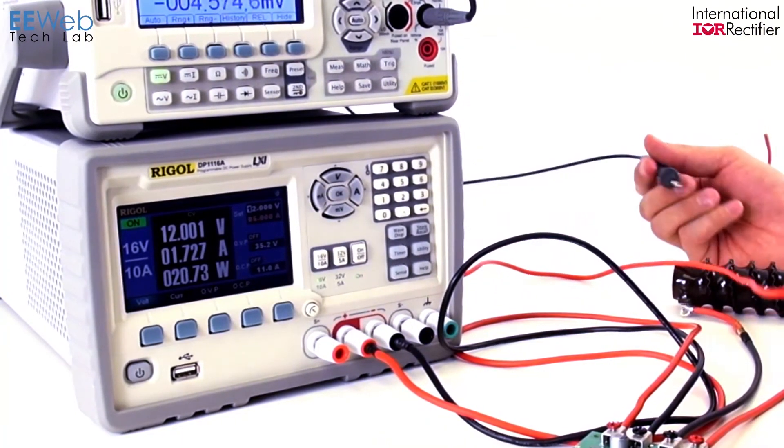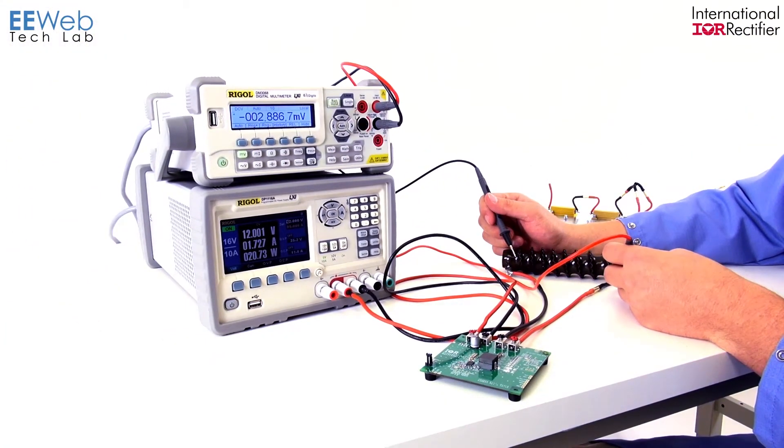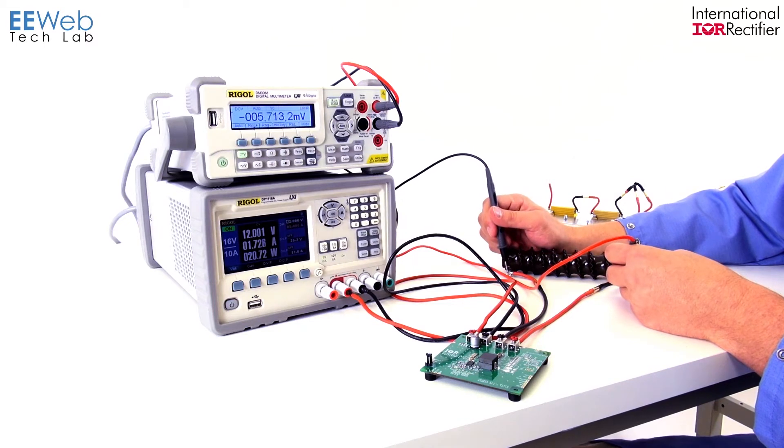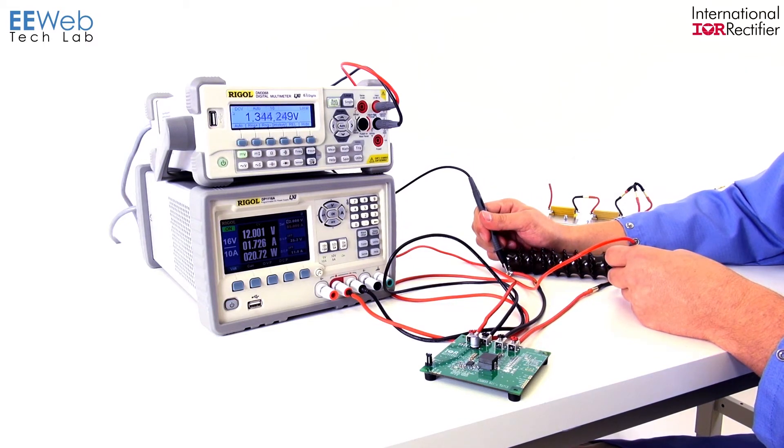So if we measure across this now, we're going to multiply by about 10. Again, I don't have the exact resistance number, so we'll just assume it's 0.1 ohm, and at 1.4 volts we should be at about 14 amps.